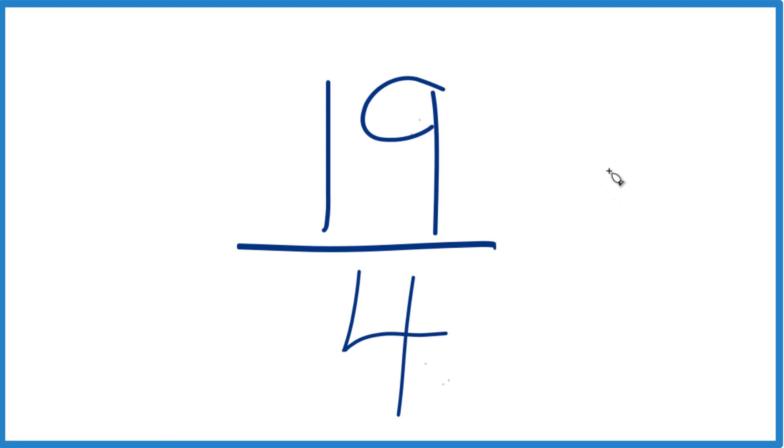But the only number that goes into 19 and 4 evenly, that's 1. So if we divide 19 by 1 and 4 by 1, our common factor, we get 19 fourths.